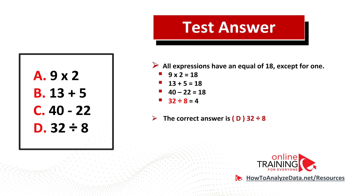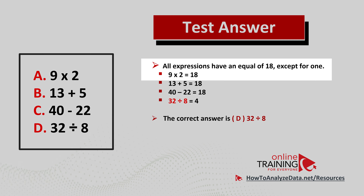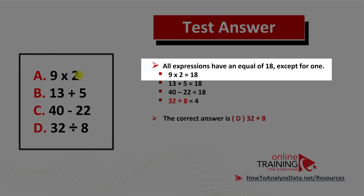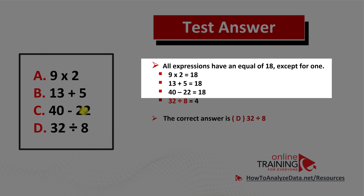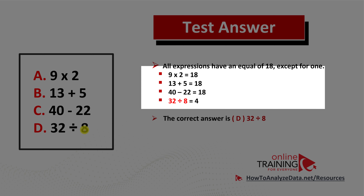As you might have figured out by now, three choices out of four lead to the same answer. 9 multiplied by 2 is 18. 13 plus 5 is 18. 40 minus 22 is 18. And 32 divided by 8 is not 18.